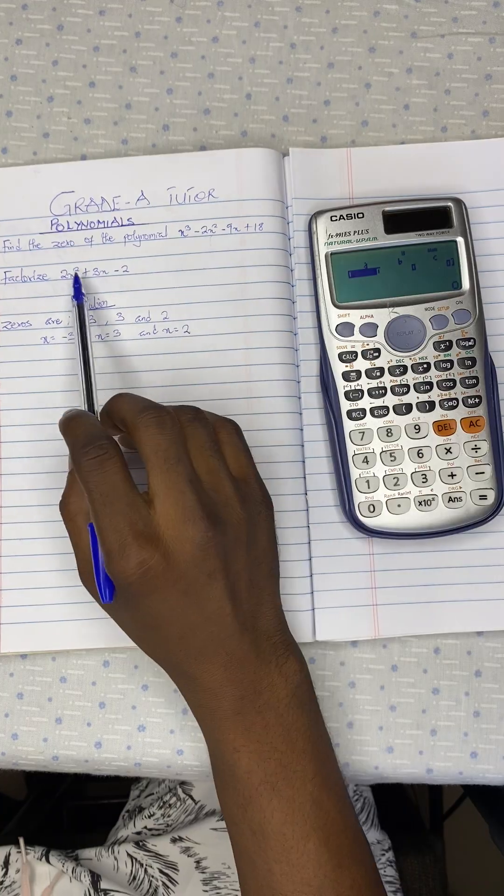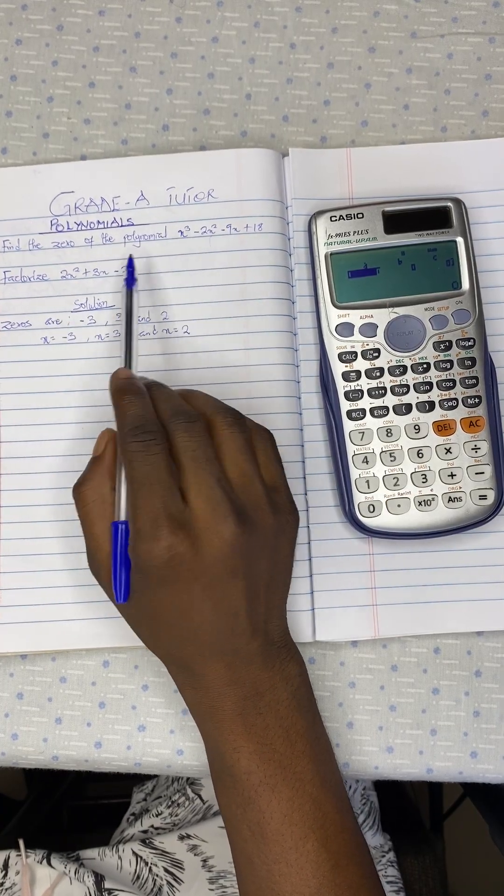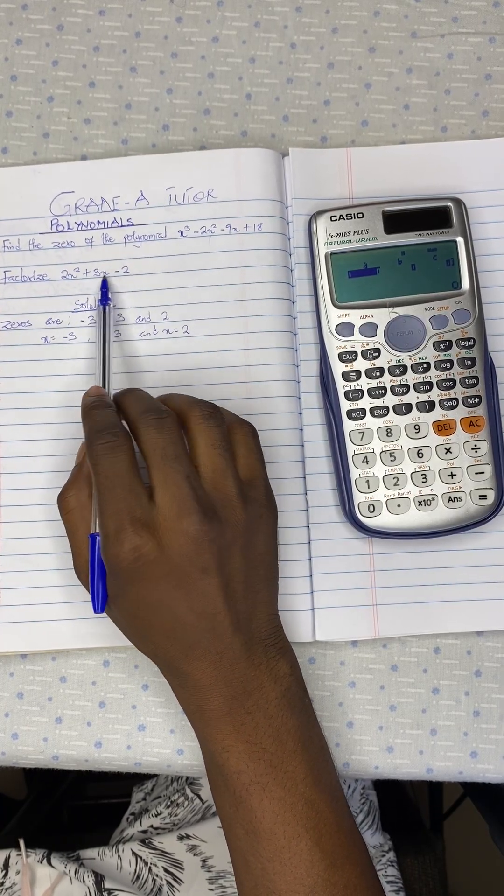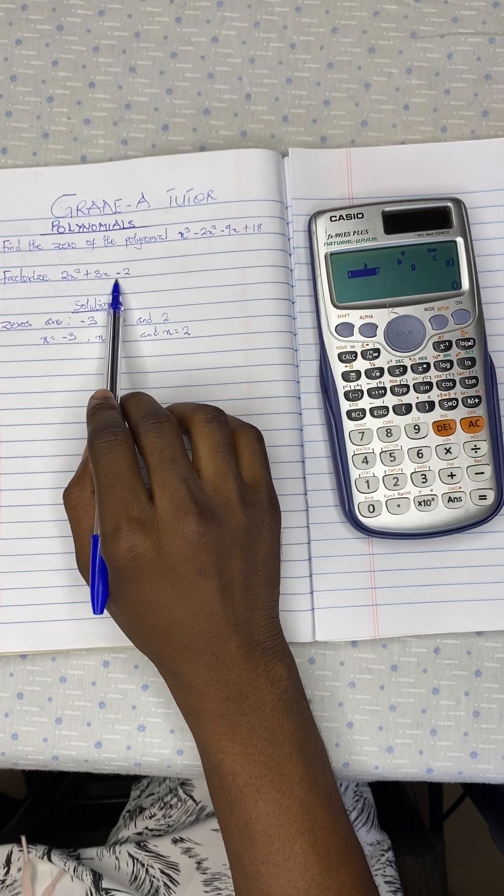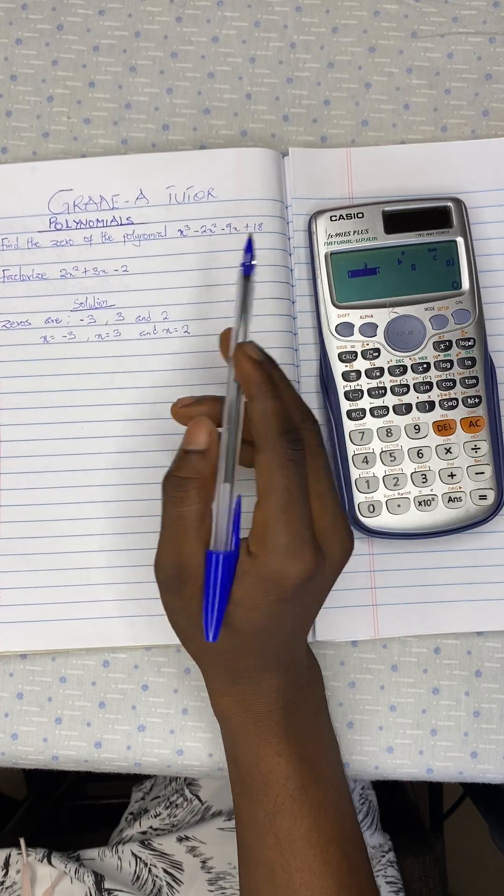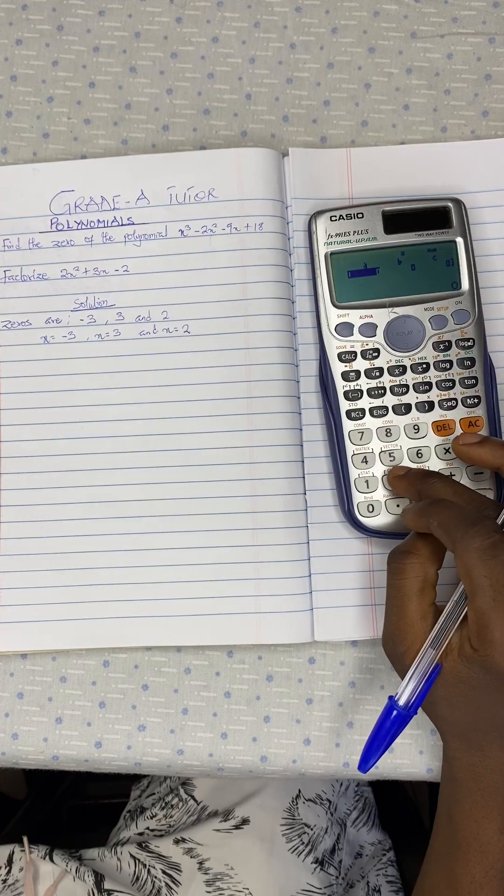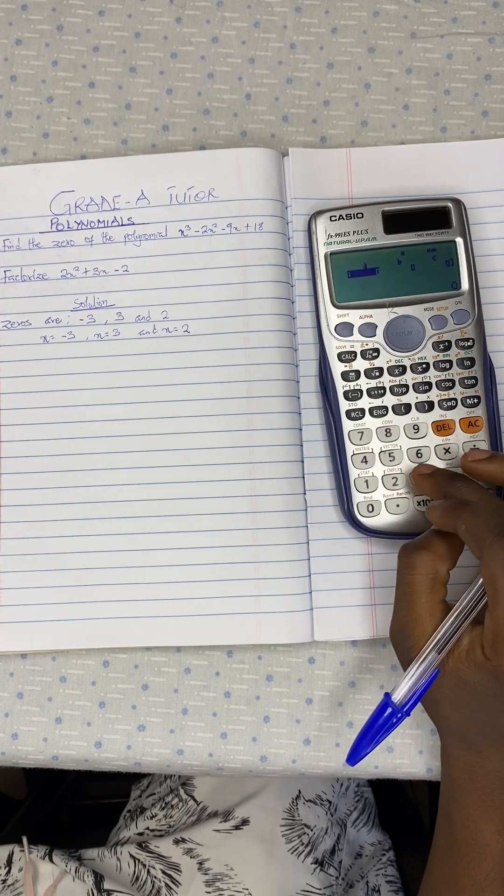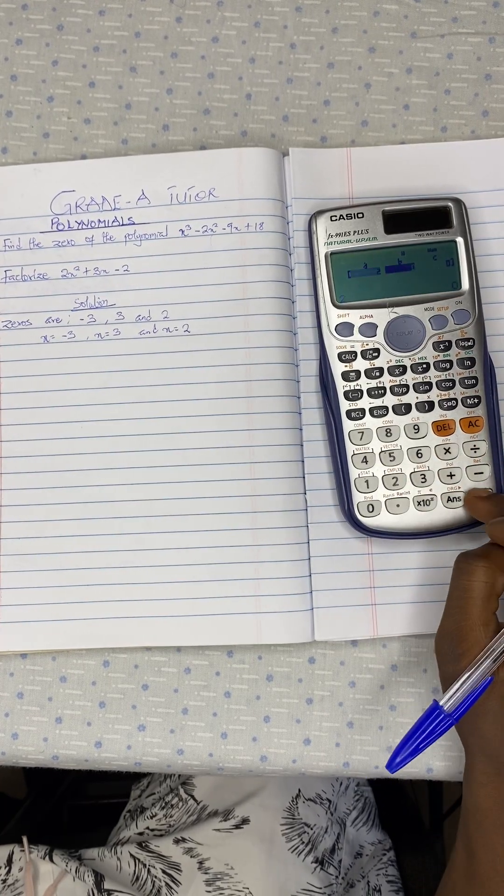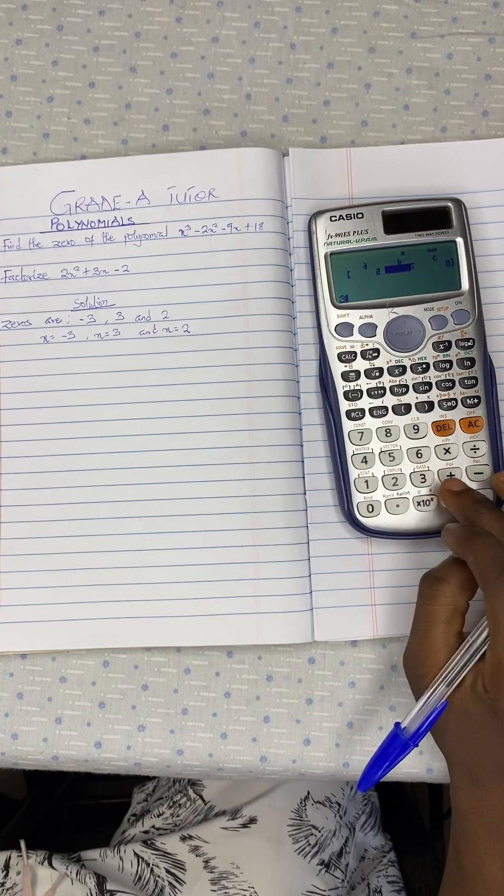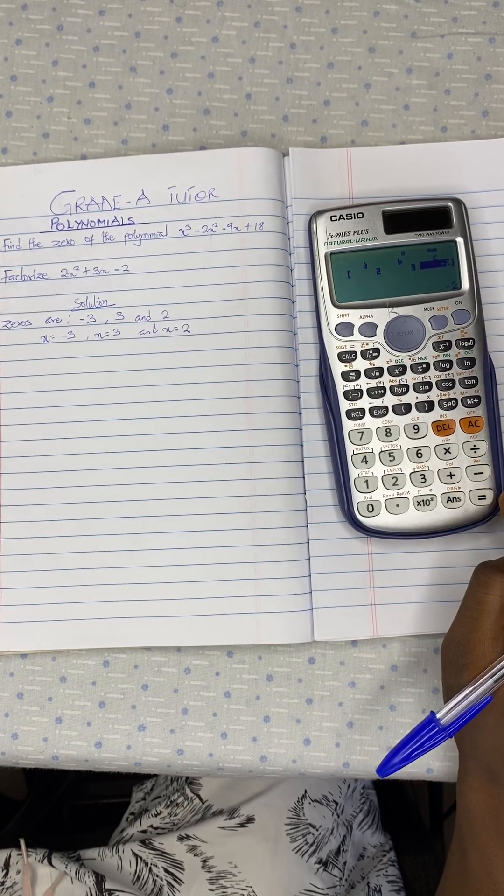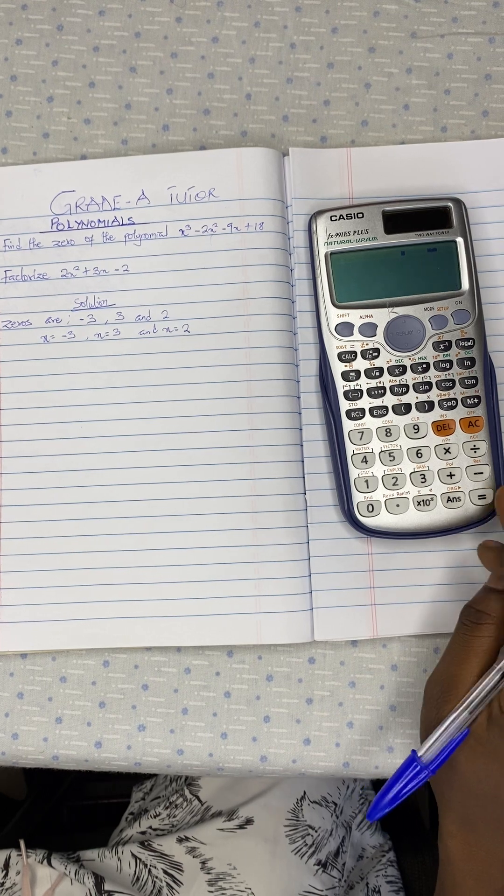The coefficient of x squared is 2. Coefficient of x is 3, and the constant is negative 2. So we do the same as we did for the polynomial. We have 2 here, positive 3 and negative 2. So we press on equal to.